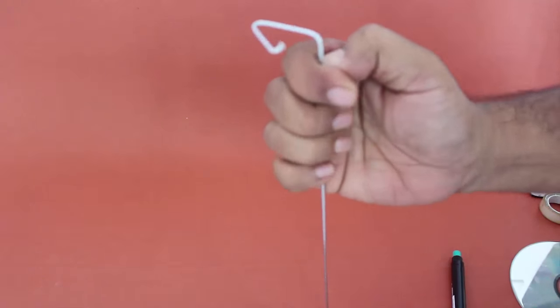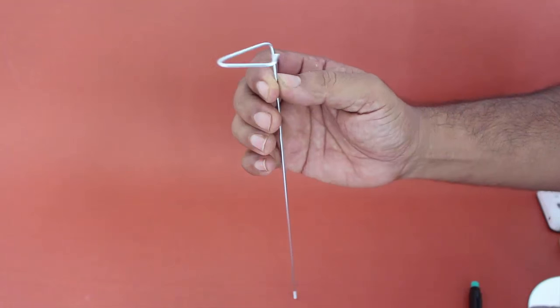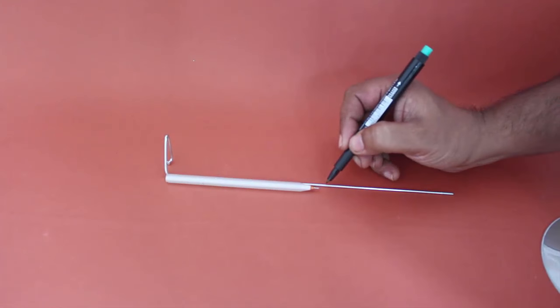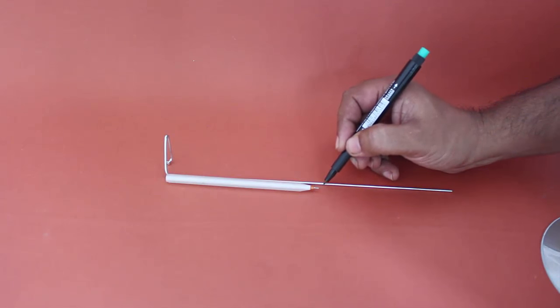Now mark the length of the pen without the cap and bend it perpendicular such that it is perpendicular to the V-shaped bend also.